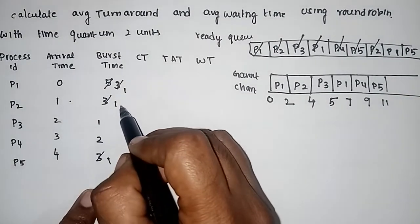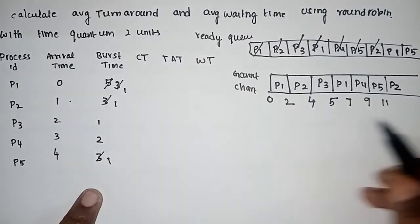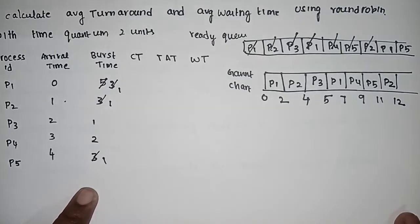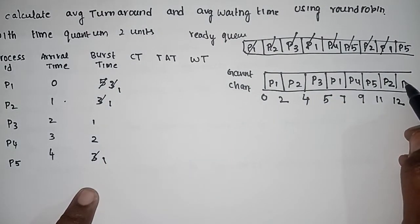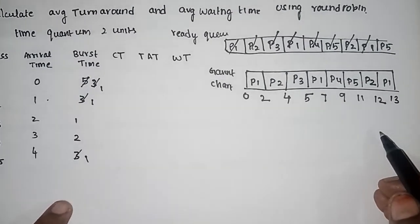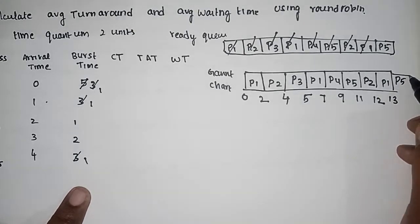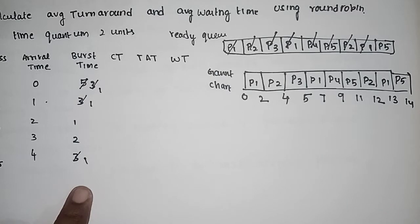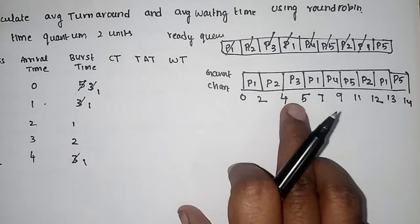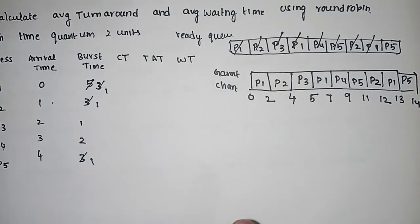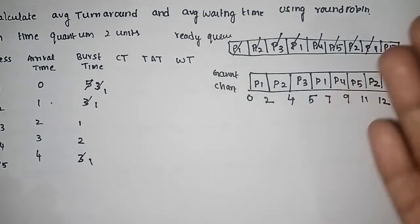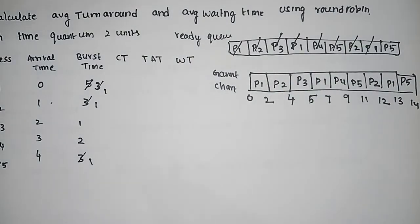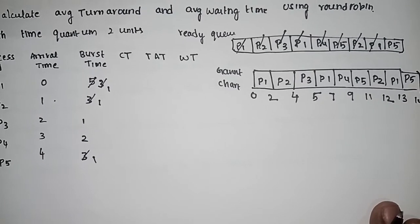P5 takes a lot of time. The time quantum is 2 units; the execution follows the round robin rule. CPU execution time is assigned based on remaining time in the ready queue order.